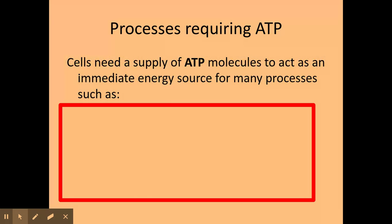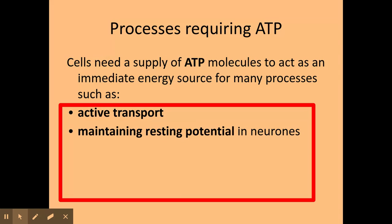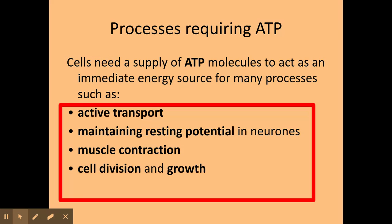It might be worth pausing the video and thinking of these processes before moving on. Processes that require ATP include: active transport, maintaining resting potential in neurons, muscle contraction, cell division and growth. Essentially, most metabolic reactions involve and require ATP. When answering exam questions, make sure you say 'metabolic reactions' — not just 'reactions' — to secure that marking point.